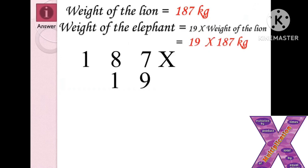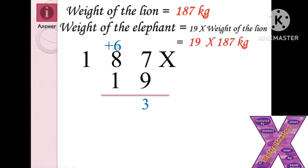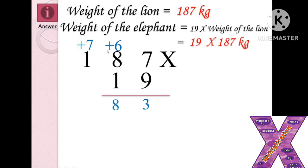187 should be multiplied by 19. First we multiply by 9: 9 times 7 is 63 — write 3, carry 6. Then 9 times 8 is 72, plus 6 carry is 78 — write 8, carry 7. Then 9 times 1 is 9, plus 7 carry is 16 — write 16. That completes the first step.